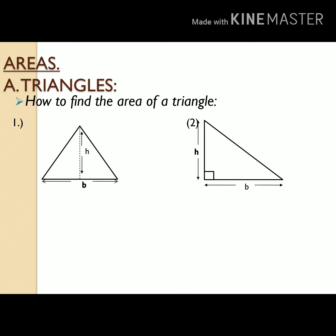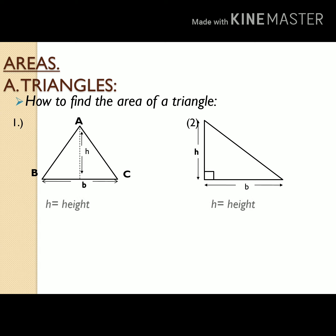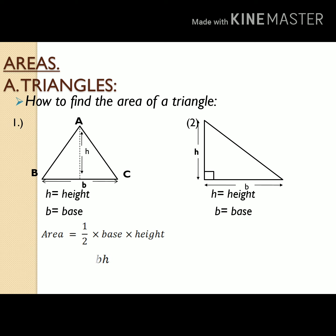We have seen triangles since grade 1, 2, 3, and 4, but this time we want to look at finding the area. A triangle is a figure with three sides. It has a height and a base. You can see in the second figure a right-angle triangle with a height and a base. The base is represented by letter B and the height by letter H. Finding the area, we use the formula: area equals one half times base times height, or briefly, area equals one half bh.